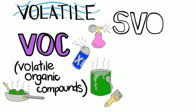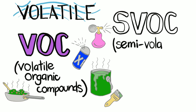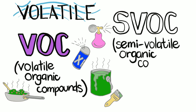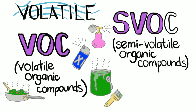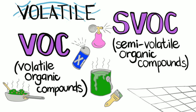Semi-volatile organic compounds, or SVOCs. These compounds are not very different from VOCs except that they evaporate much more slowly. Some examples include phthalates, a class of compounds that are slowly emitted from things like vinyl flooring and some personal care products.